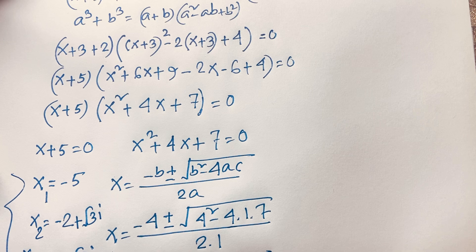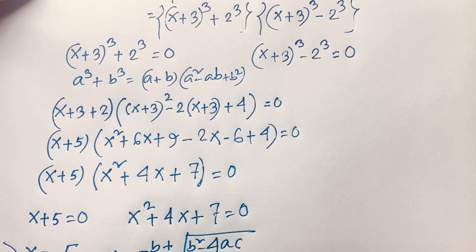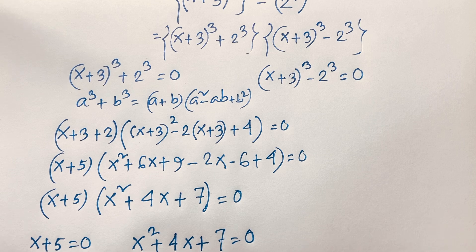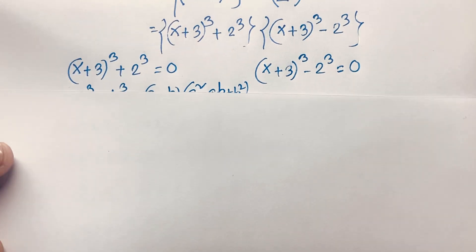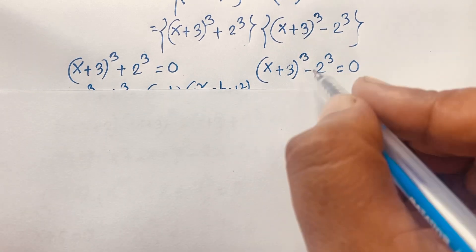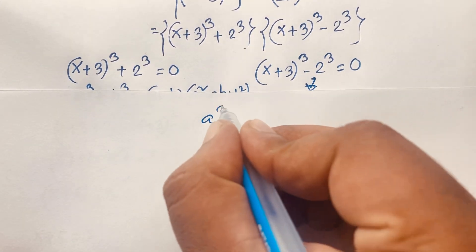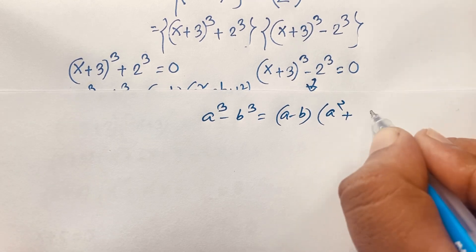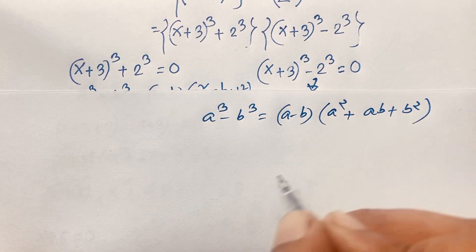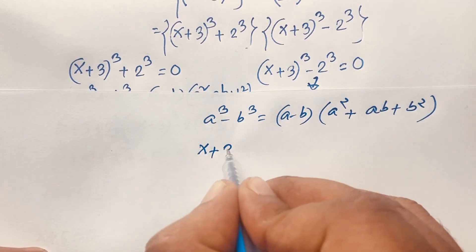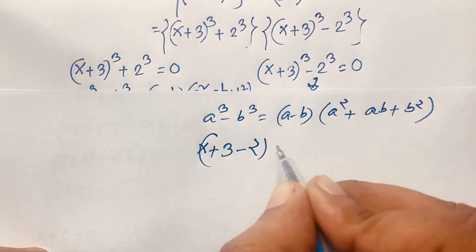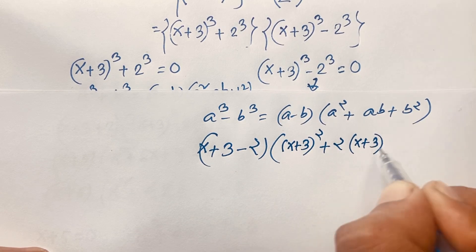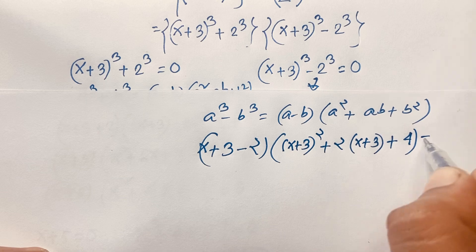But x₄, x₅ and x₆ are equal to what? In this expression, I can see (x+3)³ − 2³ = 0. I use the a³ − b³ law: a³ − b³ = (a−b)(a² + ab + b²). Following this law: (x+3−2) times [(x+3)² + 2(x+3) + 4] = 0, which gives (x+1)[(x+3)² + 2(x+3) + 4] = 0.